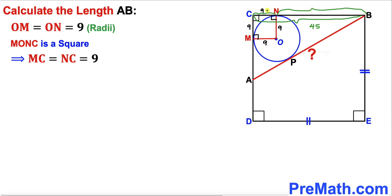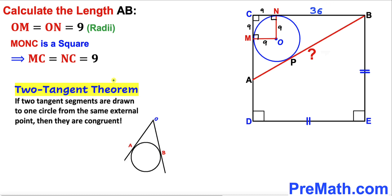Now let's recall the two-tangent theorem. According to this theorem, if two tangent segments are drawn to one circle from the same external point, then they are congruent.